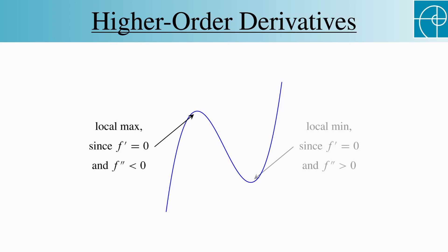Likewise, this is a local minimum, which we can verify by noting that the first derivative there is 0, and the second derivative there is positive.